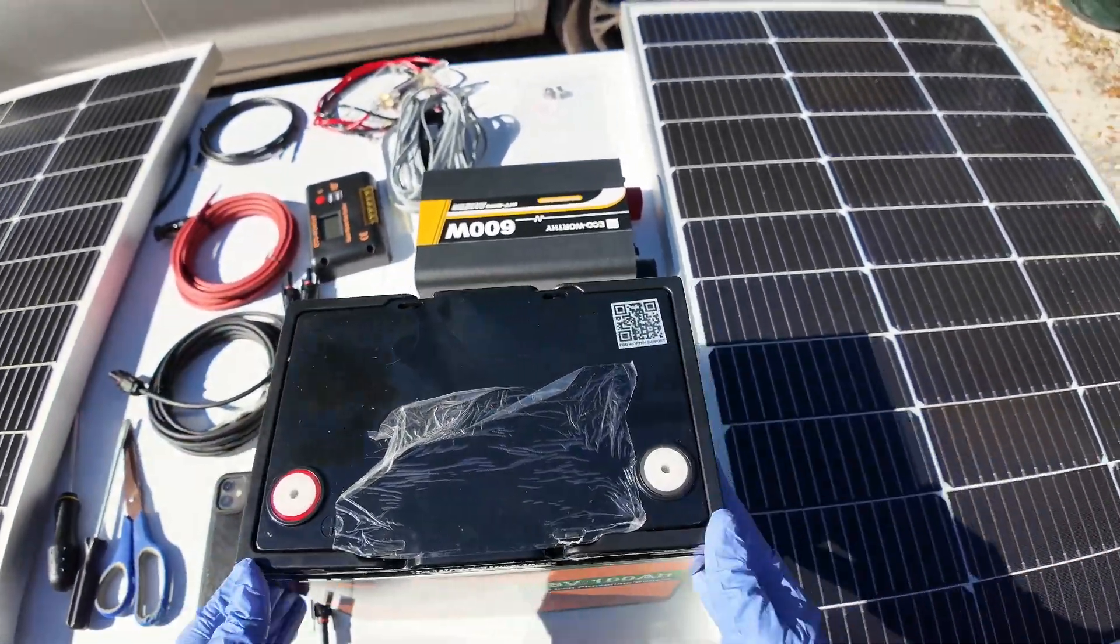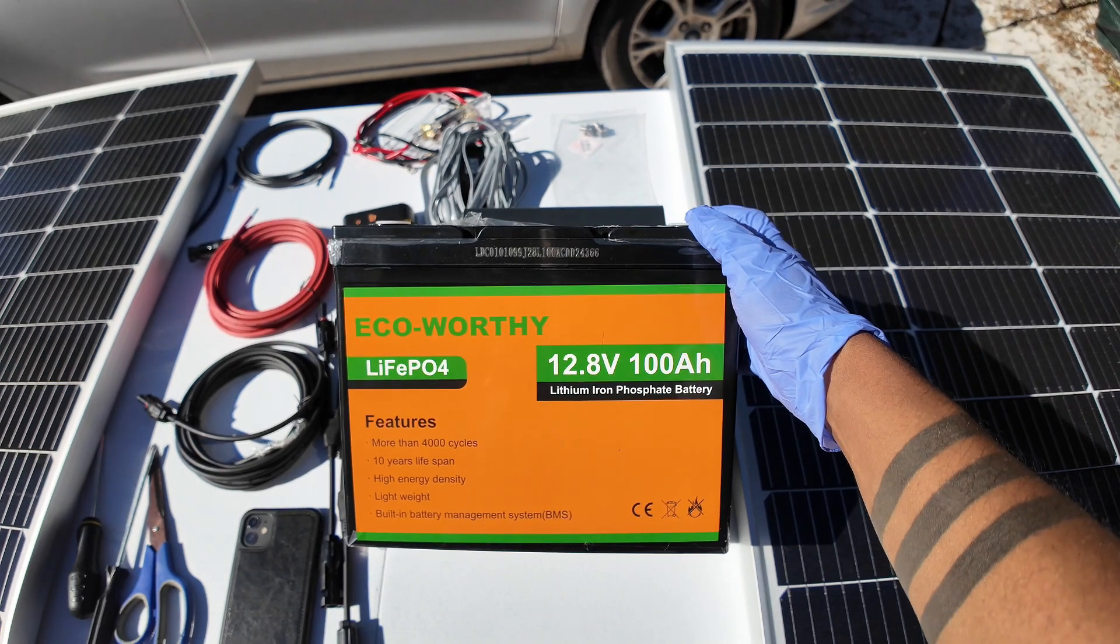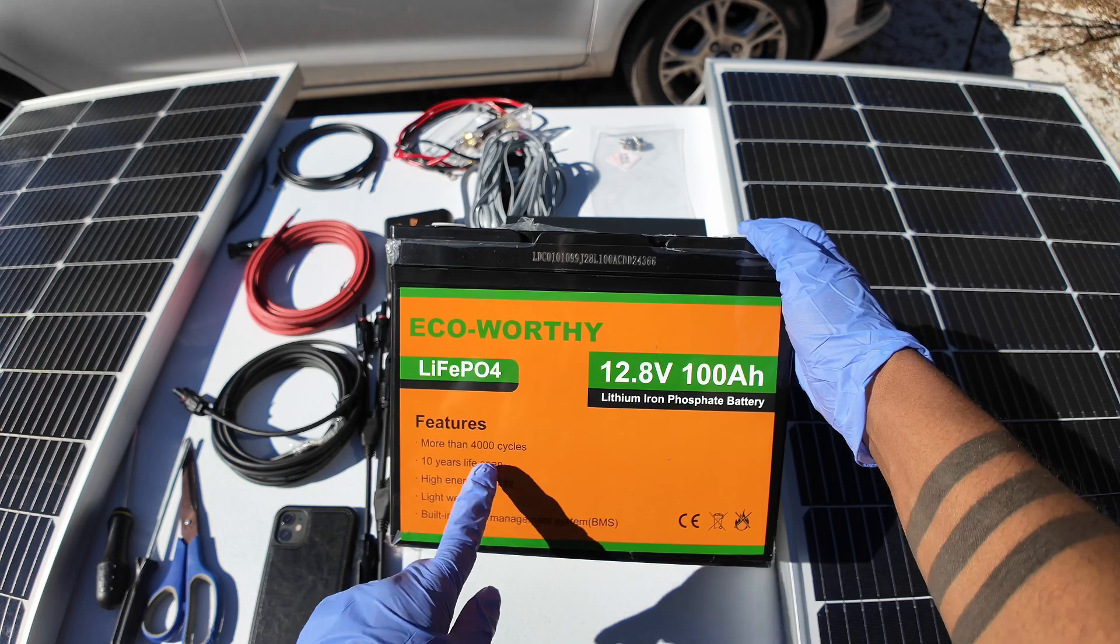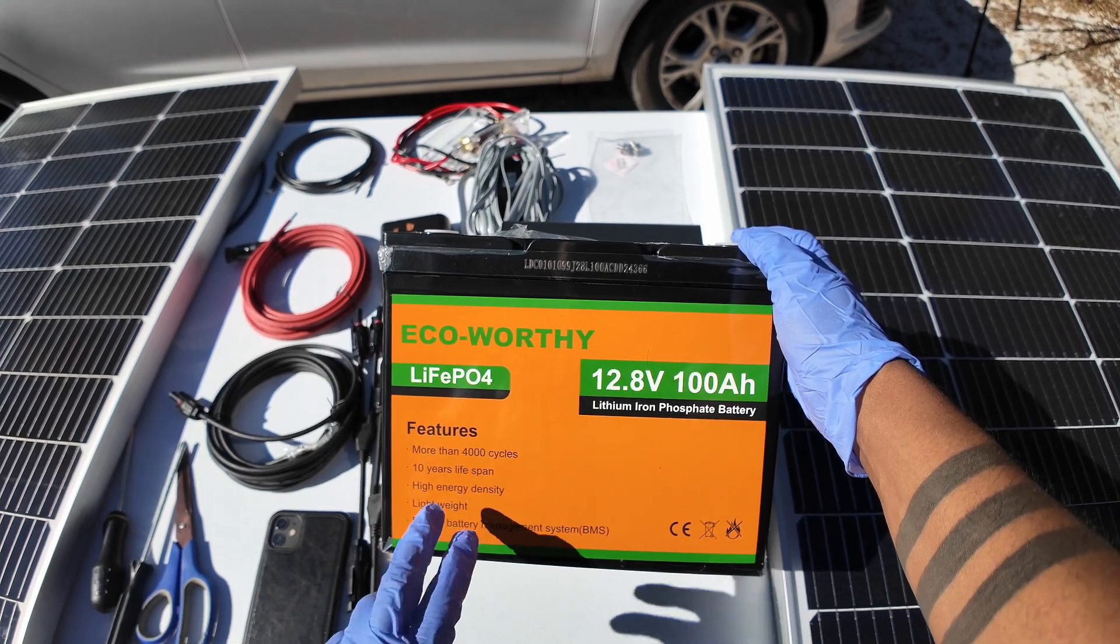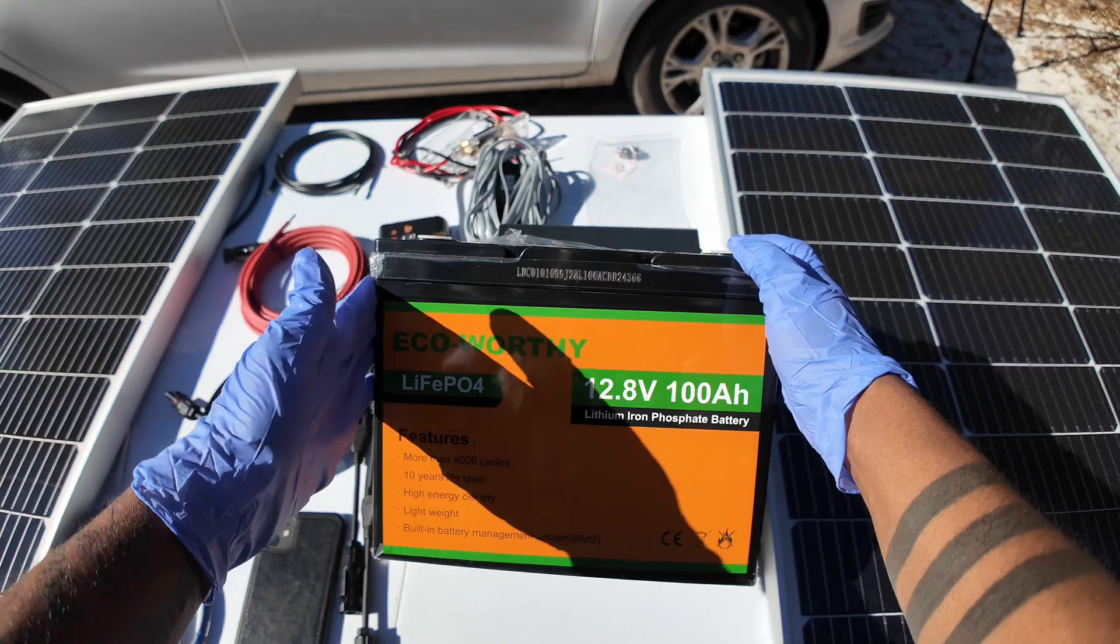EcoWorthy is giving us some budget-friendly options for solar. This is a lithium-ion phosphate battery. You will get 4,000 cycles or more. It's a 10-year lifespan, high energy density, lightweight, and there is a built-in battery management system with this product.